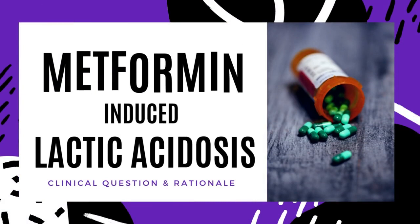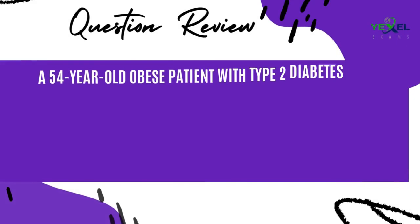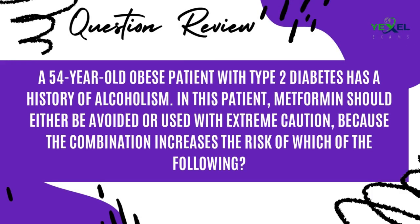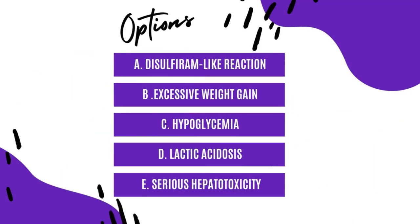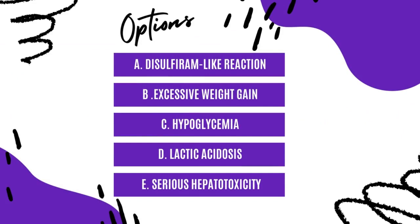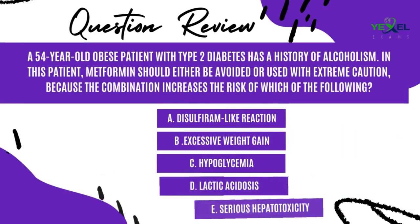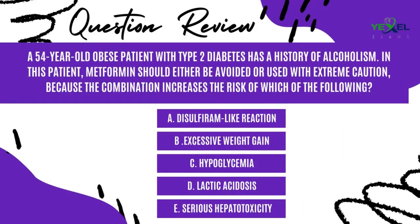Let's jump into another important question. A 54-year-old obese patient with type 2 diabetes has a history of alcoholism. In this patient, metformin should either be avoided or used with extreme caution because the combination increases the risk of which of the following? This is a one-step question you can answer straight away, but let's figure it out together.